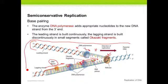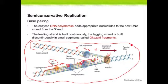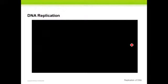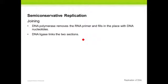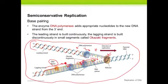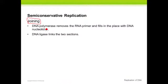There are plenty of YouTube videos that give a good visual for this process — you'll want to go into the PowerPoint and play the video there. The last part is the joining phase — the final of the three phases. In this phase, the DNA polymerase removes the RNA primer and fills it in with DNA. Then DNA ligase links the two sections together, and you have fully replicated DNA.